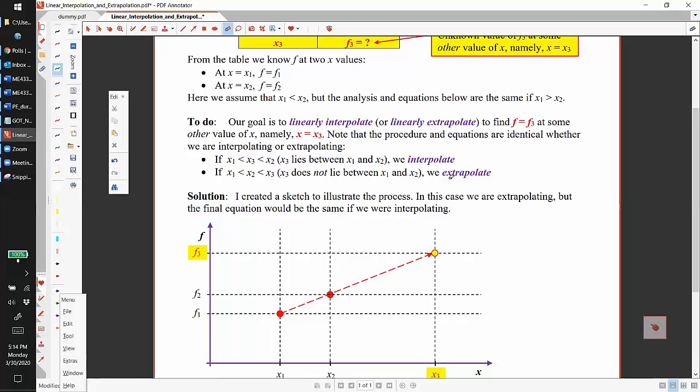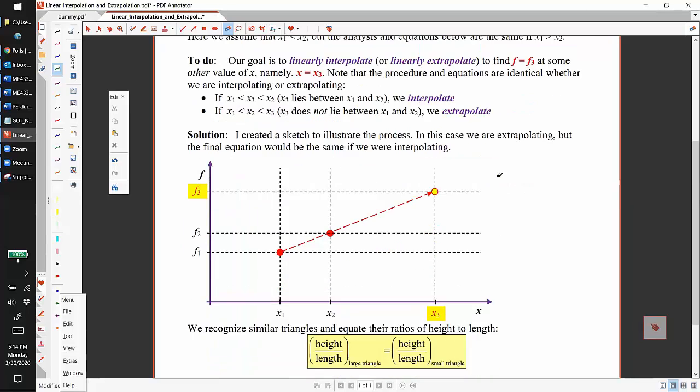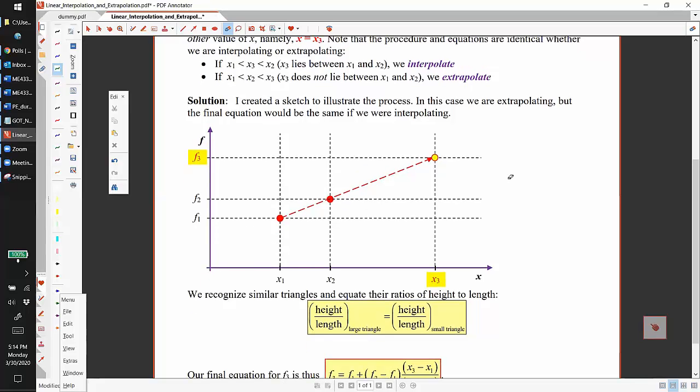I'm going to do a sketch here with the extrapolation process. It works the same and the algebra actually ends up being identical if we're interpolating. So we have a given x1 and x2 with the corresponding f1 and f2—those are these two red points here—and I extrapolate out to point x3 and some unknown f3 by making a straight line.